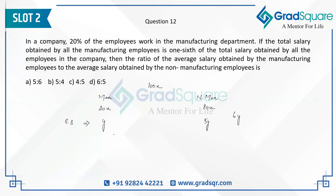Now the ratio of the average salary obtained by the manufacturing employees: average salary is total salary divided by number of employees — y divided by 20x for manufacturing, and 5y divided by 80x for non-manufacturing. The y and x cancel out. This gives 1/20 to 5/80, which simplifies to 1/20 to 1/16 — so the ratio is 4 is to 5.